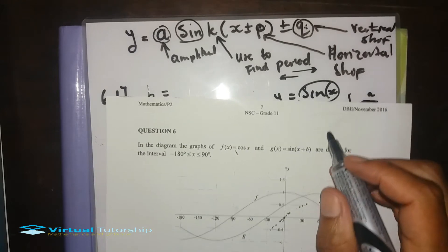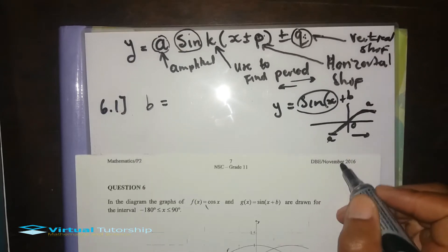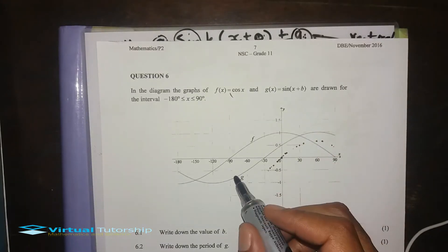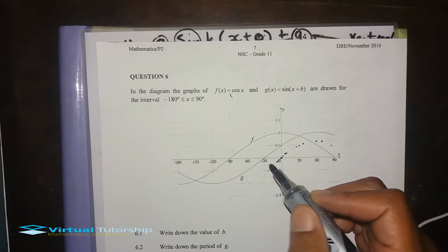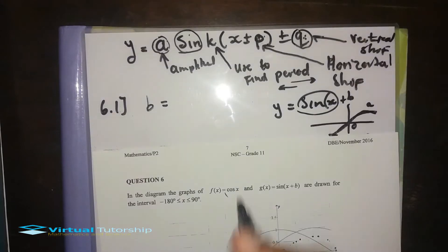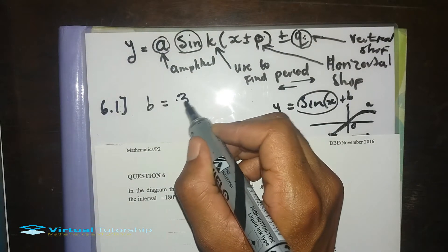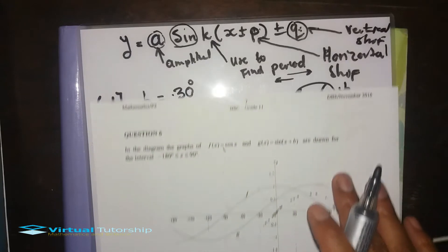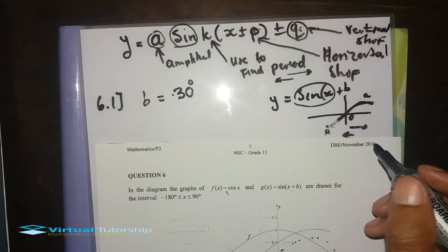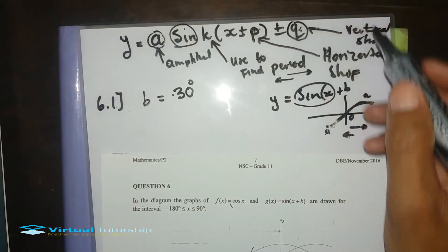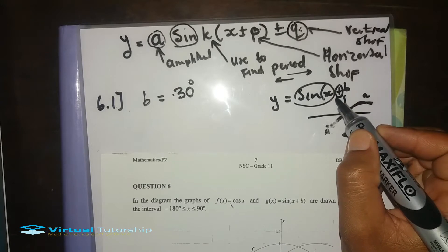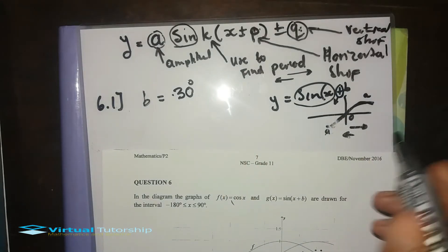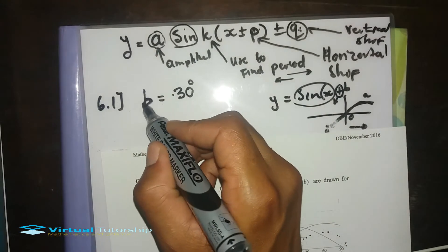The function has a horizontal shift of b — it's either moving to the right or to the left. The sine graph will not pass through the origin, and it has shifted by 30 degrees. So b is equal to 30 degrees. Be mindful: if the sine function has a plus b, the graph is shifted to the left; if it's a minus, it's shifted to the right. So it makes sense for the 30 degrees to be a positive value.